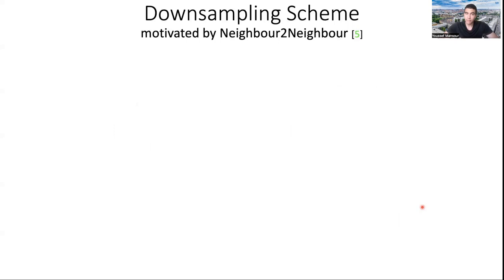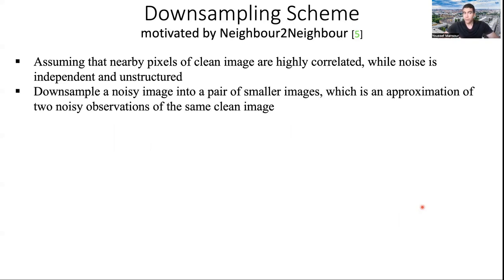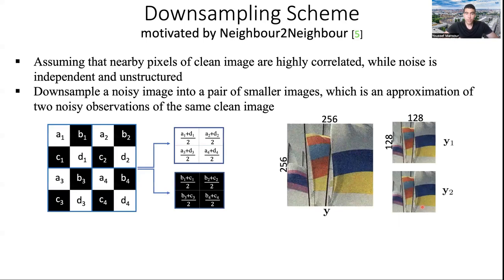So let's start with the downsampling scheme, which is motivated by Neighbor2Neighbor. The assumption is that nearby pixels of a clean image are highly correlated, while the noise is independent and unstructured. So you could downsample a noisy image into a pair of smaller images, which then serve as an approximation of two noisy observations, but of the same clean image.